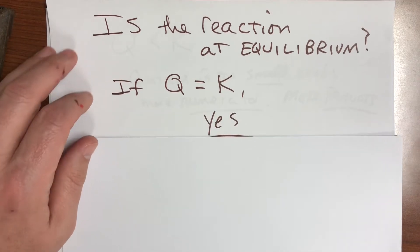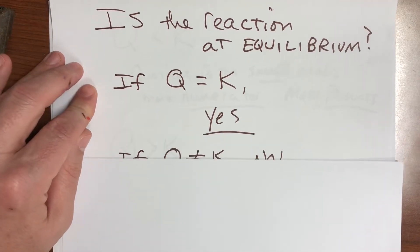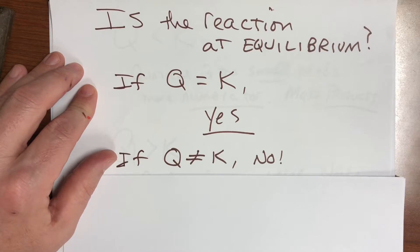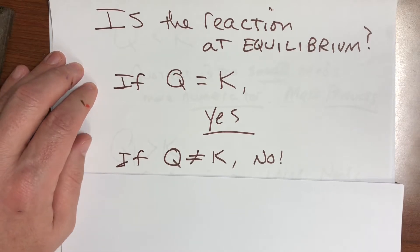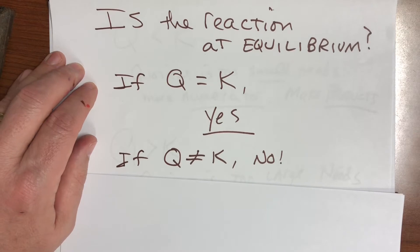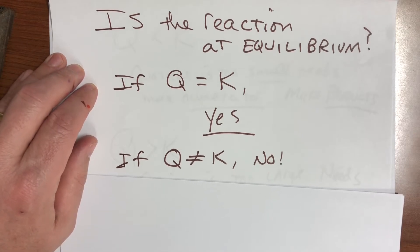If they don't, then no, it's not at equilibrium. So basically plug in the numbers into your K expression. If it spits out K, it's at equilibrium. If it doesn't spit out K, it's not at equilibrium. Not too bad.